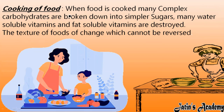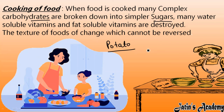Next we are having cooking of food. When we cook food — for example, a potato — after cooking the entire properties of the potato change. In a potato, carbohydrates are there and during cooking they break down into simpler sugar particles. Many water-soluble vitamins and fat-soluble vitamins present are destroyed by the process of cooking. The texture of the food completely changes, and cooked potatoes or cooked vegetables cannot be converted back into raw potatoes or raw vegetables. So cooking of any food is also an irreversible change, and chemical properties also change, making it a chemical change.